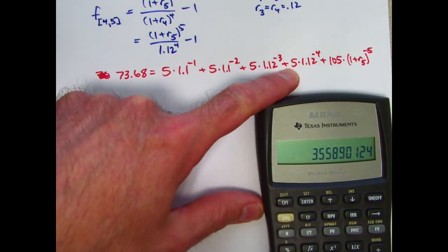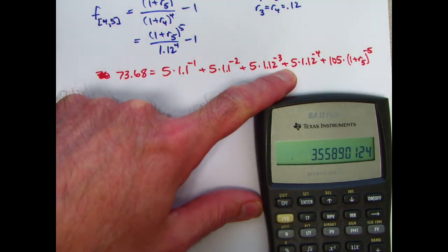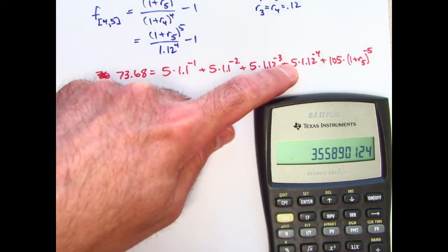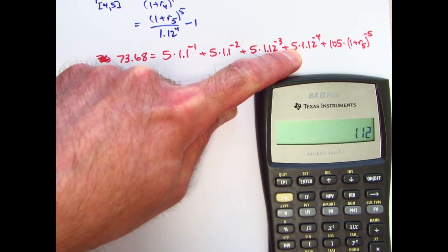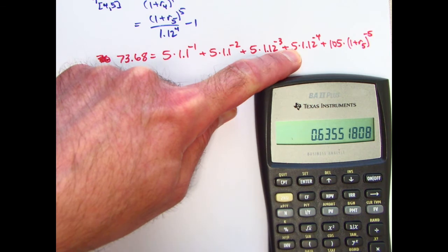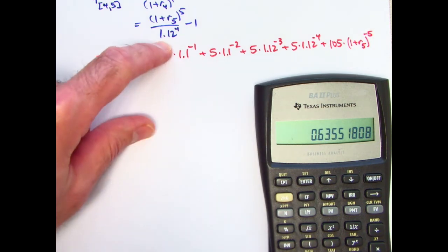Technically, I won't need to use a storage feature here if I ultimately want to solve for R5. However, I think I'm going to anyway with the 1.12 to the negative 4 power because I'll store that in register 4. Store 4 because I will need that up here.